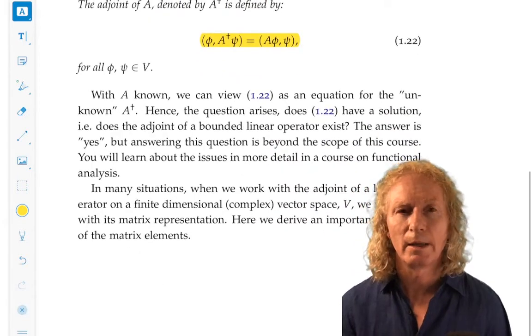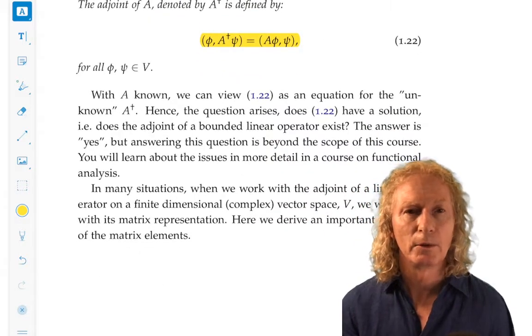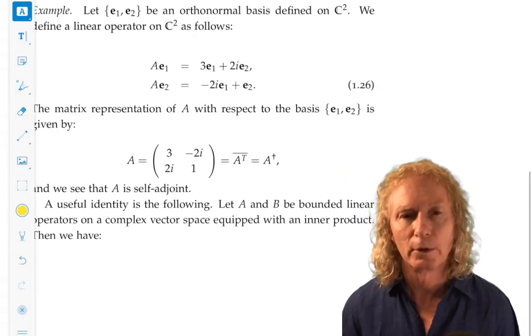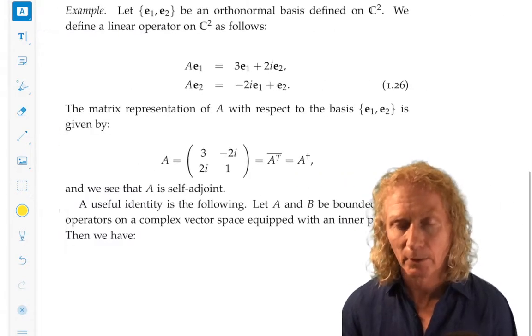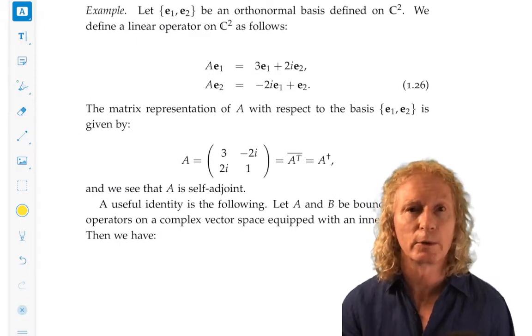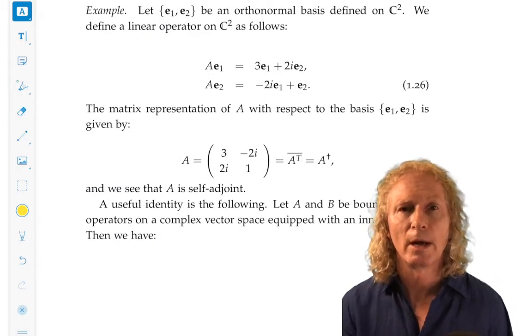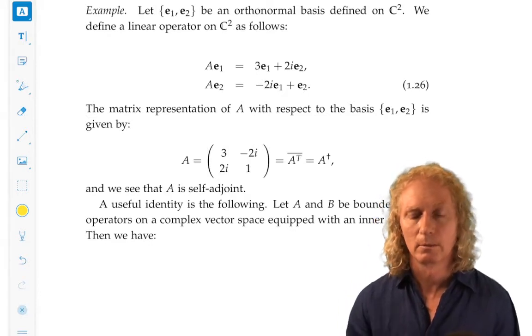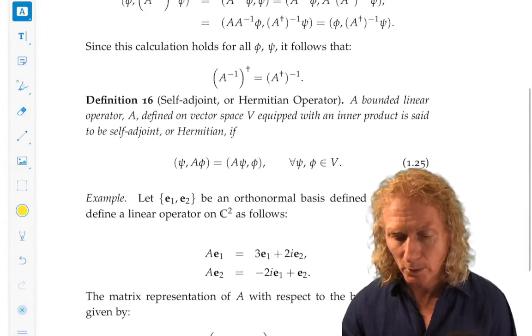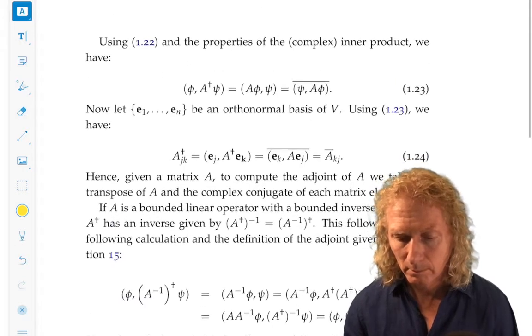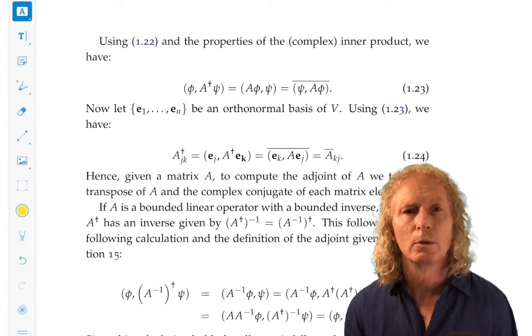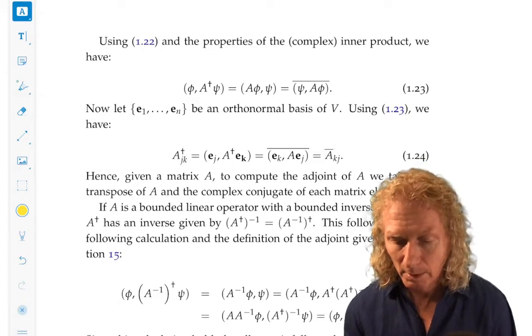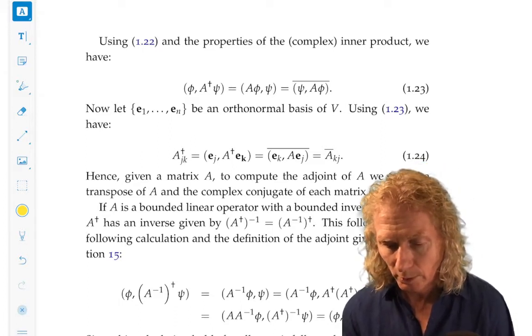Now, we saw last time that if we have a basis, computing the matrix representation of an operator in that basis can be very useful. It can help us to actually do calculations of how the operator acts on specific vectors. So, what we want to do now is compute the matrix representation of the adjoint. Look at equation 1.23.